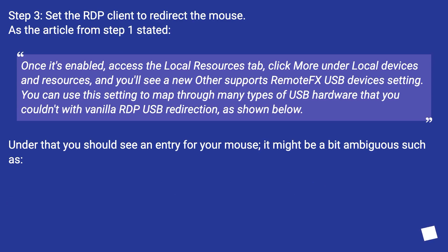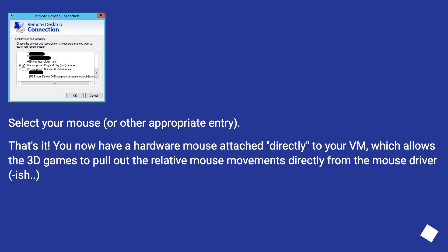Step 3: Set the RDP client to redirect the mouse. Once it's enabled, access the Local Resources tab, click More under Local Devices and Resources, and you'll see a new 'Other supported remote USB devices' setting. You can use this to map through many types of USB hardware that you couldn't with vanilla RDP USB redirection. Under that you should see an entry for your mouse — it might be a bit ambiguous. Select your mouse or other appropriate entry. That's it — you now have a hardware mouse attached directly to your VM, which allows 3D games to pull relative mouse movements directly from the mouse driver.